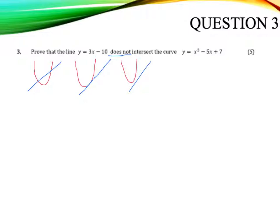Well, we're trying to show that these two things here don't intersect. It's a bit like a pair of simultaneous equations. So what we're going to do is we're going to take y equals 3x minus 10, and we've got y equals x squared minus 5x plus 7. And because we've got y equals here, we can put them equal to each other, rearrange, and see if we can use the discriminant on that.